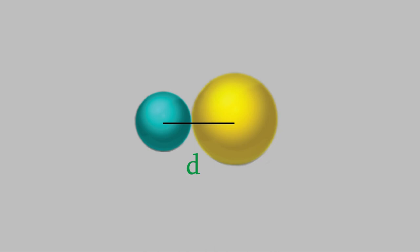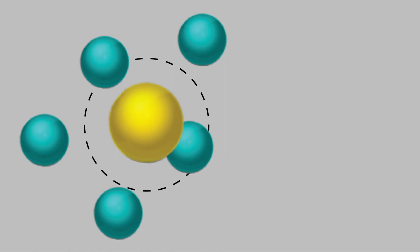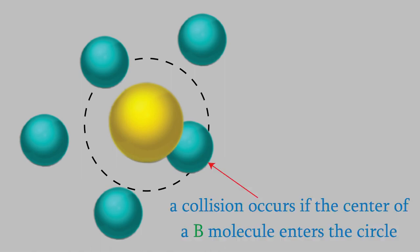Now, suppose we're sitting behind the molecule A as it travels through the gas. Imagine a circle with radius D around the molecule. In order for a B molecule to collide with the A molecule, the center of the B molecule will have to stray inside the circle. If it does, then the two molecules will touch each other when molecule A passes by.